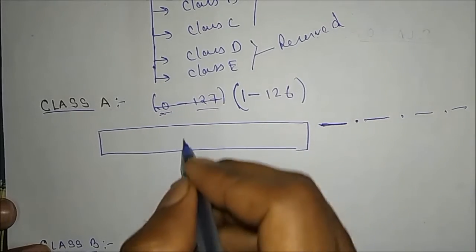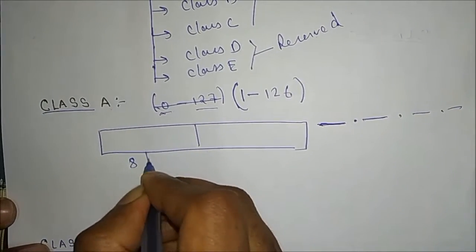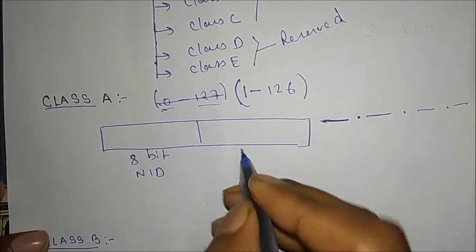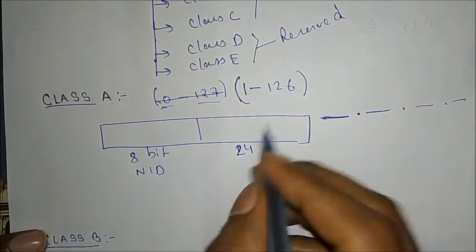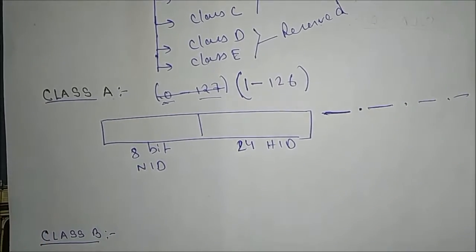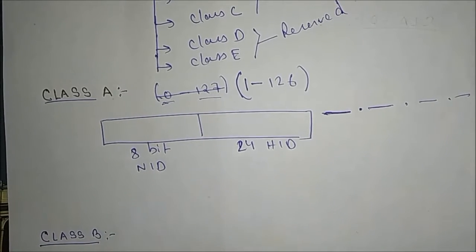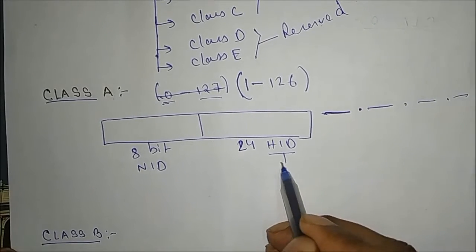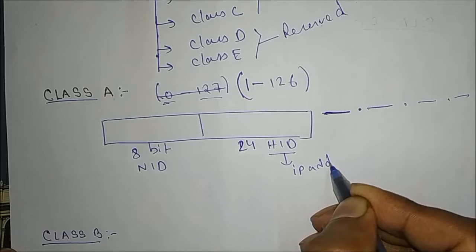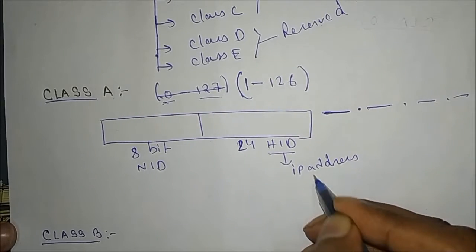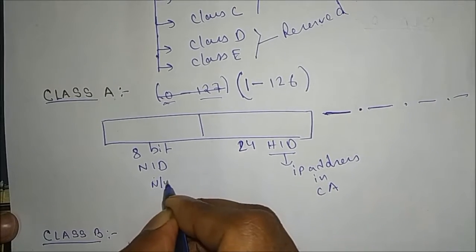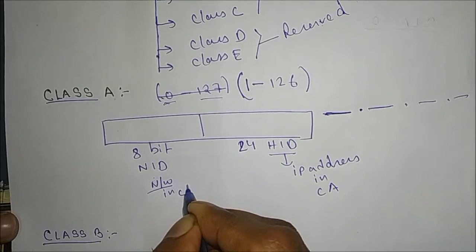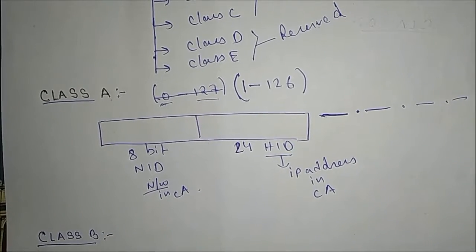In Class A, the 32 bits are divided as: 8 bits for the Network ID and 24 bits for the Host ID (8 + 24 = 32). From the Network ID we determine how many networks are available in Class A, and from the Host ID we determine how many IP addresses are available in Class A.